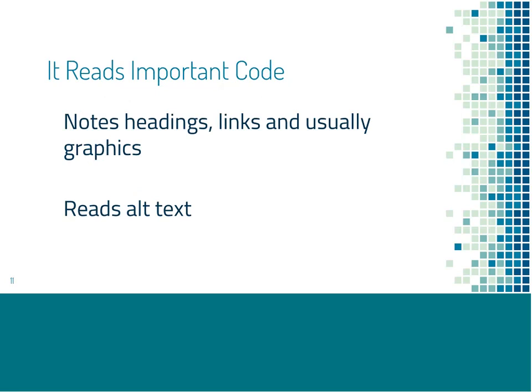Screen readers also read important code — things to make it easier for someone to navigate. It notes where the headings are, and screen readers give you the ability to hop between different headings. So if a user sees at the top of the page that the topic is ebooks, they can hop down a couple of headings to find what they need without reading everything. Headings make it a lot quicker for people to navigate big web pages. Screen readers also note links — users might hop down the links on a page of free books, see which ones they know, rather than reading every description. Making sure your links are properly labeled is really important.